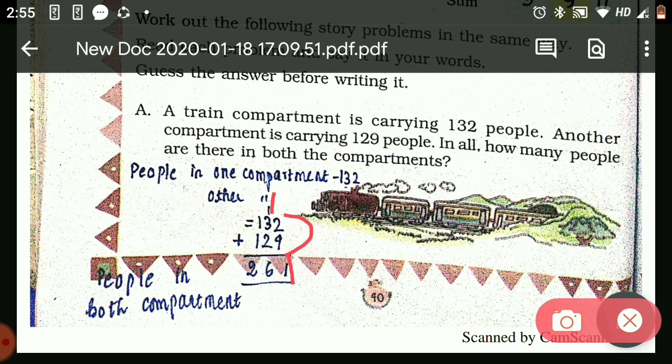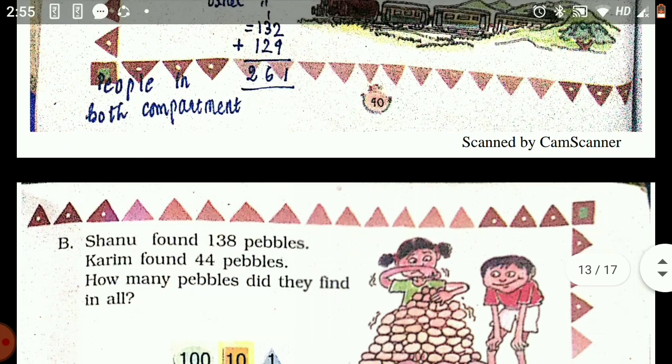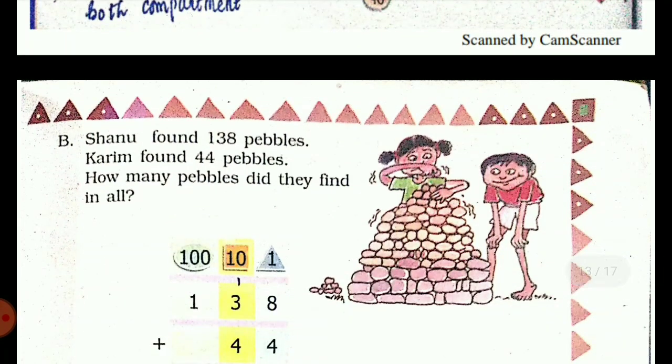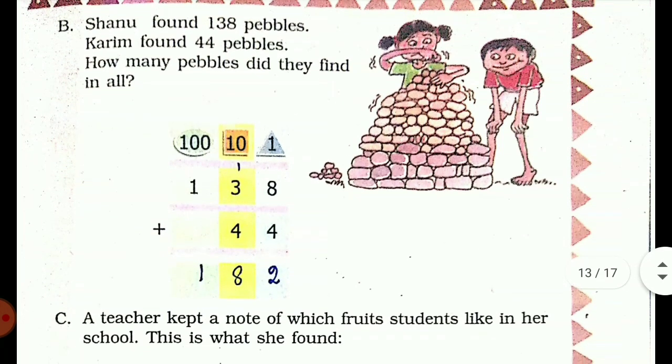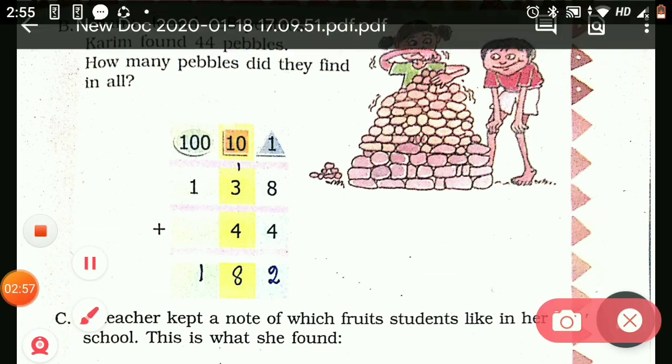Next, Shanu found 138 pebbles. Karim found 44 pebbles. How many pebbles did they find in all? You have to add 138 plus 44. 4 plus 8 is 12, so 2 here and carry 1. 1 plus 3 plus 4 is 8, then 1. So 182.